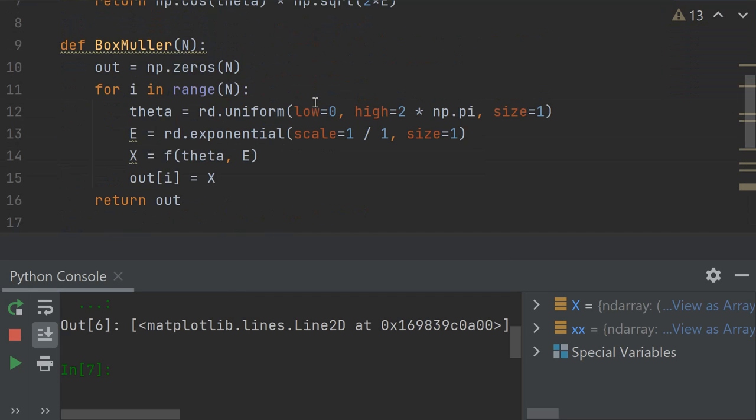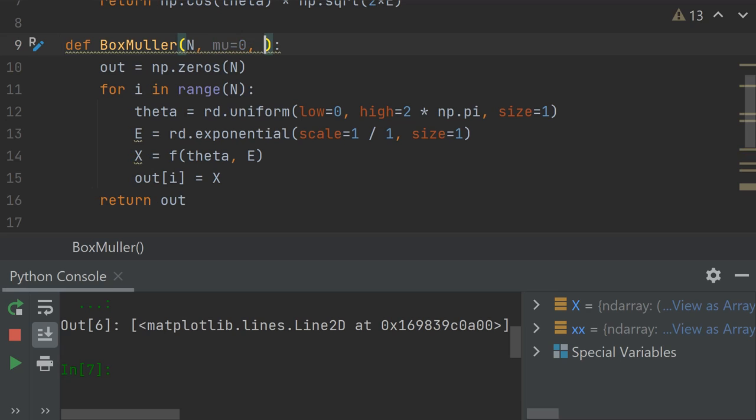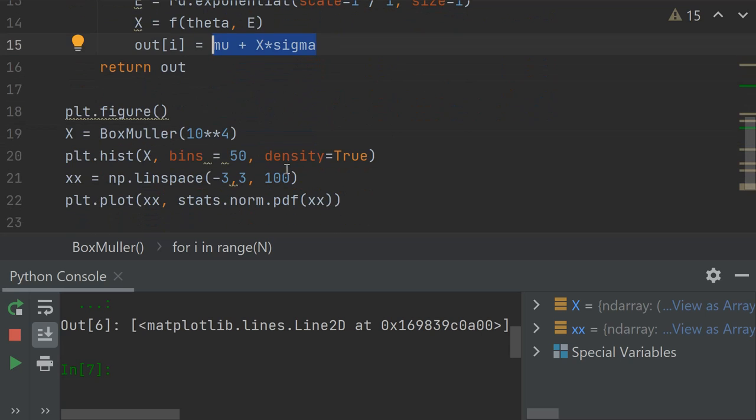So now there's one last thing to do, because this just gives us standard normals. What if we wanted to simulate from any normal distribution? Well, then instead of just adding x, we would simply add this mu plus x times sigma. And again, I don't want to show why this works. You can probably, if you watch this video, you probably have had some basic probability theory. Then you could probably show this yourself.